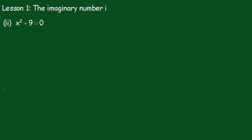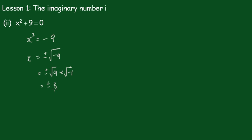Now here's another one. We'll take the 9 across to the other side, and we get x squared equals minus 9, so x would be equal to plus or minus the square root of minus 9. We'll write that as plus or minus the square root of 9 times the square root of minus 1. The square root of 9 is 3, and from part 1 we know the square root of minus 1 is i. So our solutions are x equals plus or minus 3i.